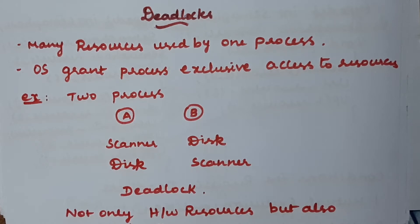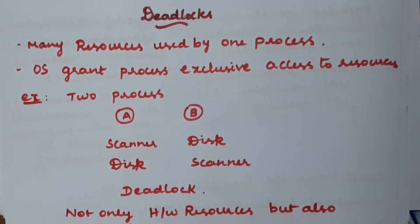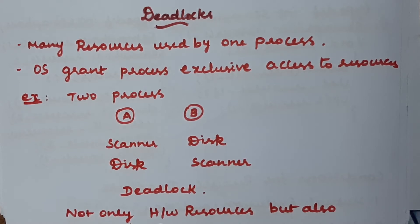The next topic is a continuation of process synchronization problems. If you have two processes and the two processes are waiting for one another, that is nothing but deadlock. Many resources are available in the system, but some particular resources can be used by only one process at a time. If more than one process wants to access the same resource simultaneously, that is not possible — this is a restriction imposed by the operating system.